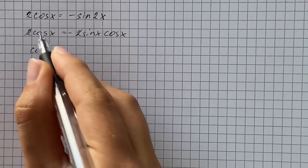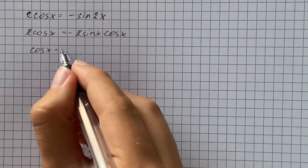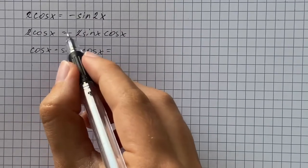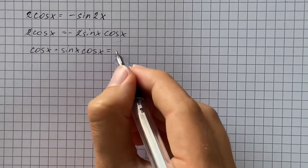And then we're going to add to the left side sine of x times cosine of x, and we're going to make one side equals to 0.